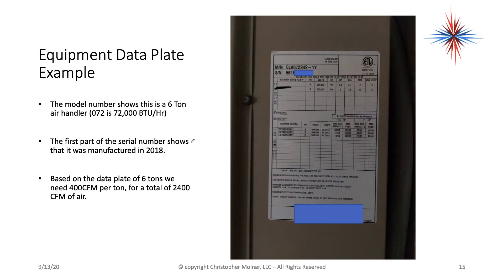Here's an example of an equipment data plate — the serial number is blocked out for privacy. The model number shows this is a 6-ton air handler; '072' tells me it's 72,000 BTU per hour, divide by 12 and it's a 6-ton unit. The serial number indicates it was manufactured in 2018, so it's a relatively new piece of equipment. Based on 6 tons, I need 400 CFM per ton for a total of 2,400 CFM of air.